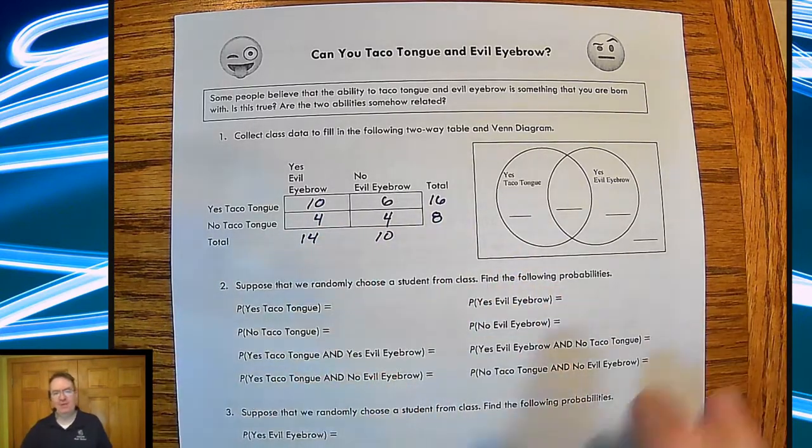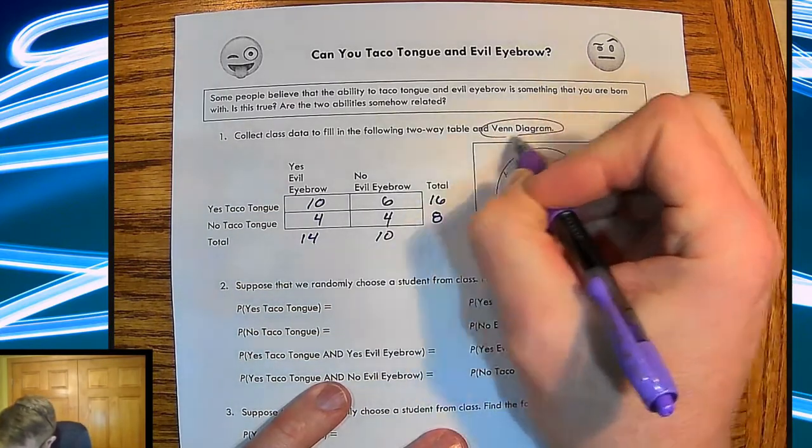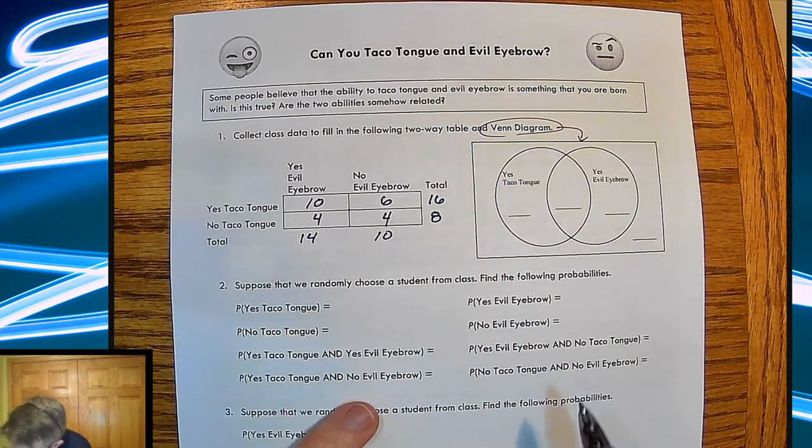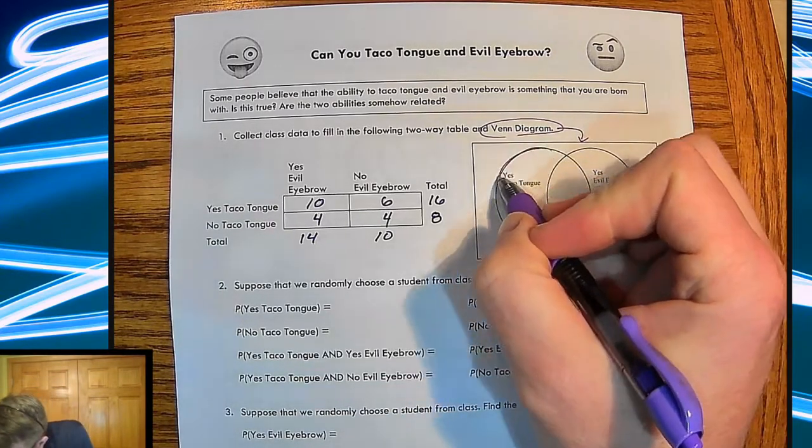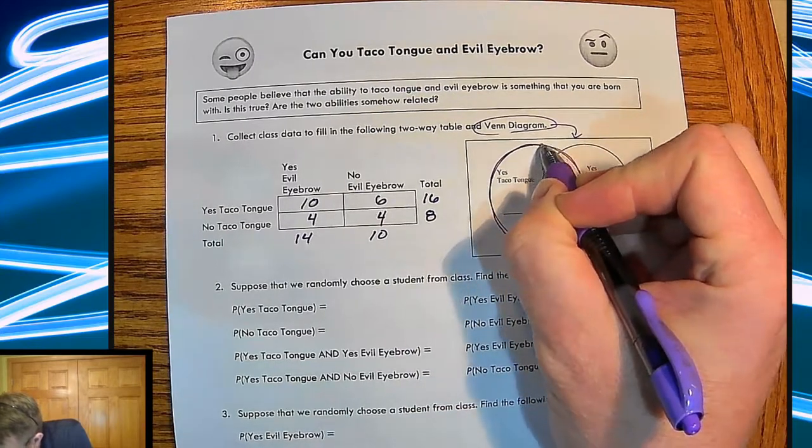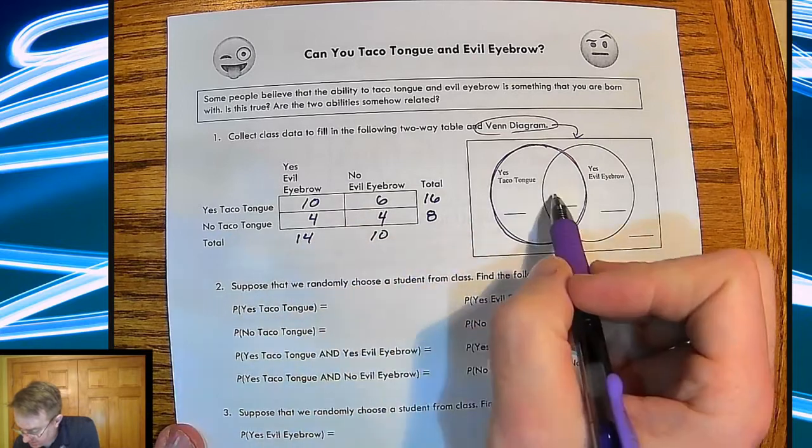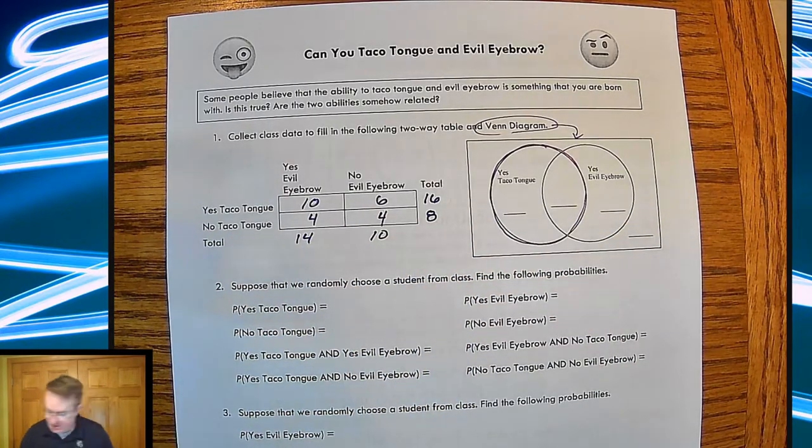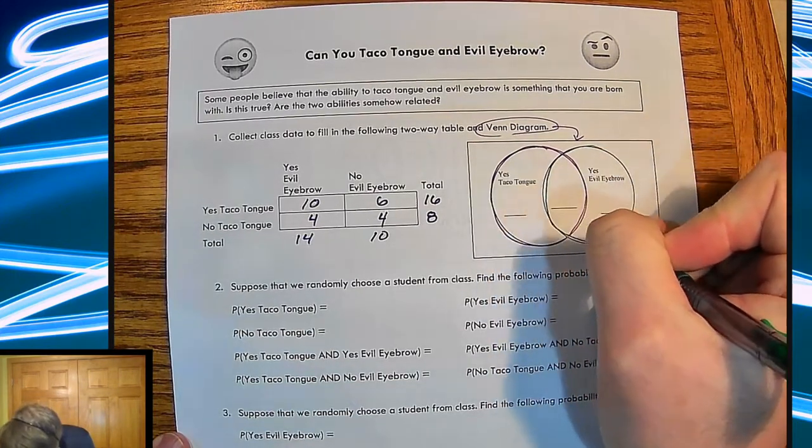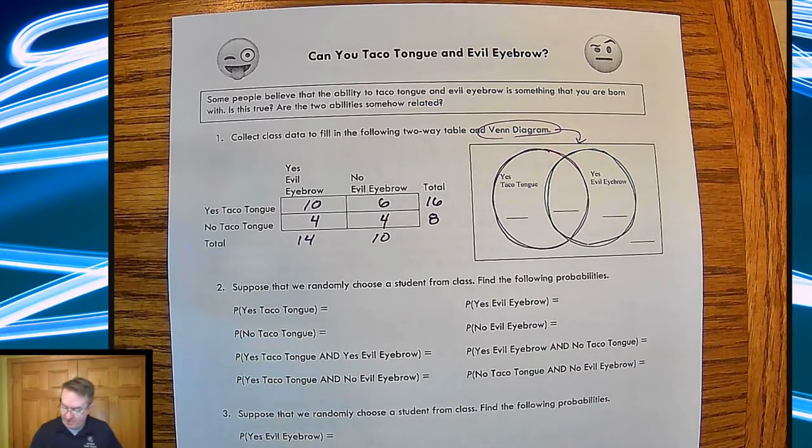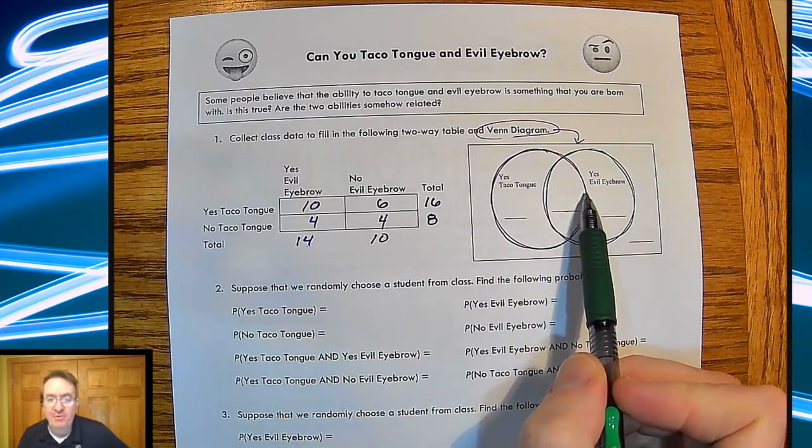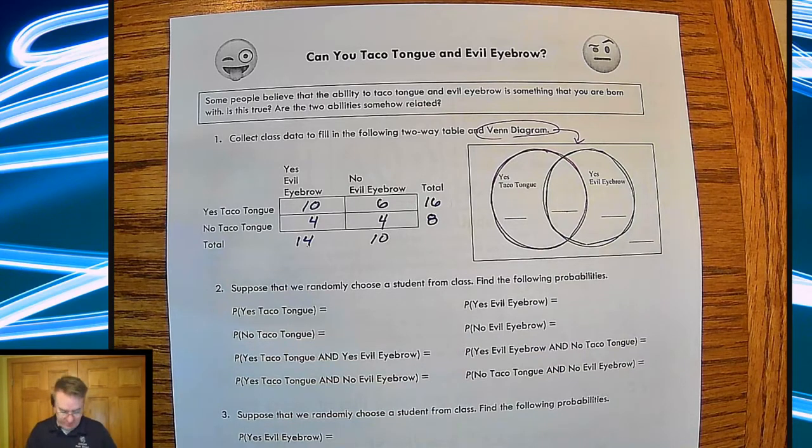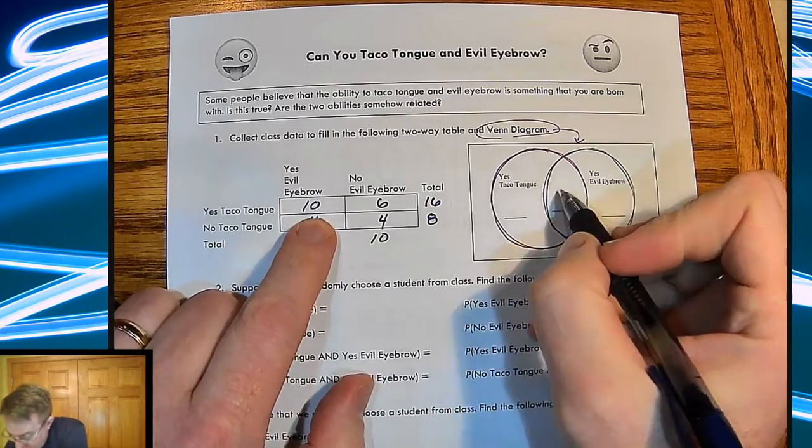So what we're going to do is we're going to use that data and make what's called a Venn diagram. And that's what's over here. So you end up getting two different circles and the two circles are actually going to have three or four. Each circle represents a characteristic or an attribute. So everybody in the circle over here is going to be the total of people who can do taco tongue, which would be this group right here. So these two points have to add up to be 16. This one over here has to be everybody who can do evil eyebrows. So that means that both of these two people numbers have to add up to become 14. The people in the middle are both in the purple and the green circle. So therefore they have to be the ones who do both. So those people are going to be right there. So this would be end up being 10.